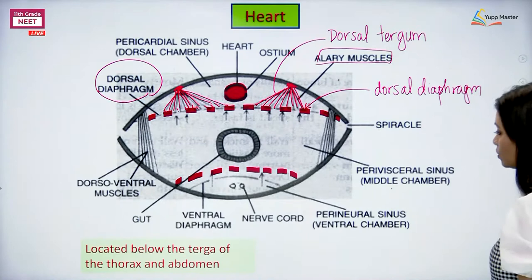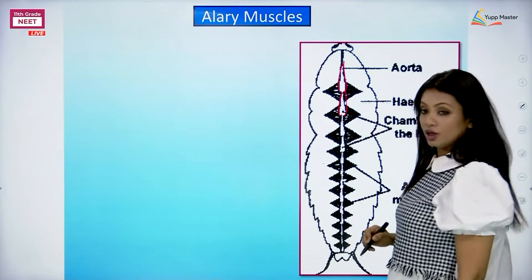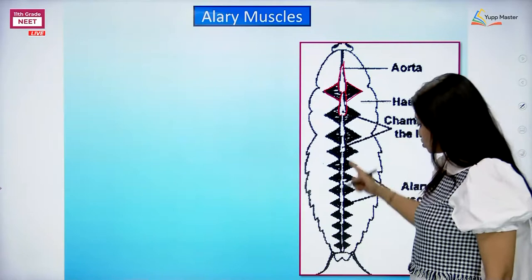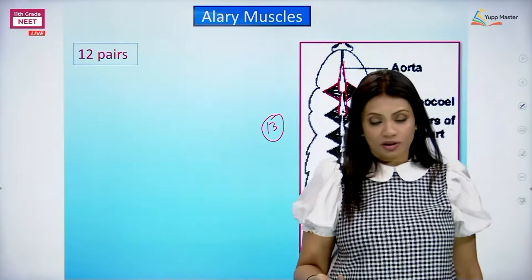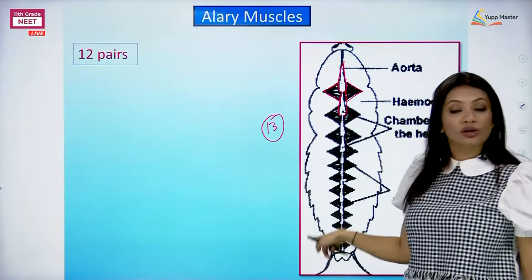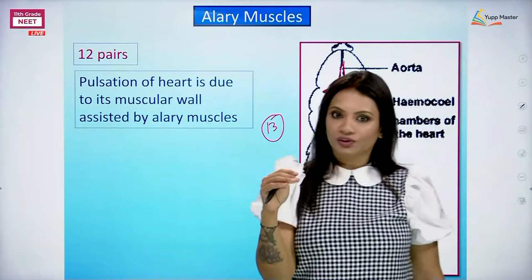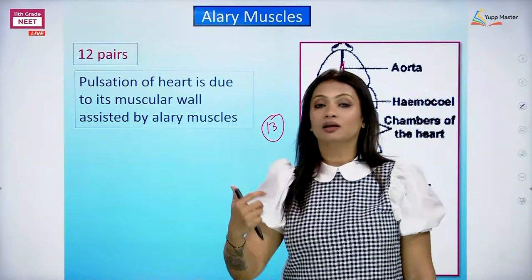The placement of alary muscles: they are placed between two chambers. Between the first and second chamber, there is one pair of alary muscles. With a total of 13 chambers, there are a total of 12 pairs of alary muscles between them - one pair between every two chambers. They are located from the dorsal tergum till the dorsal diaphragm. The heart wall which is pulsating does so with the assistance of these alary muscles.